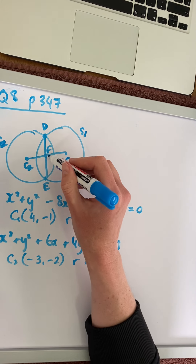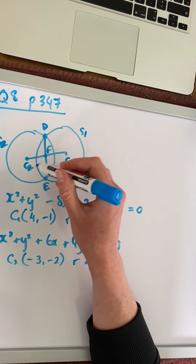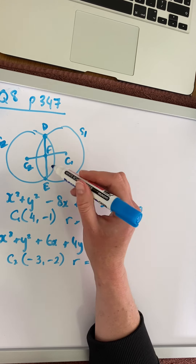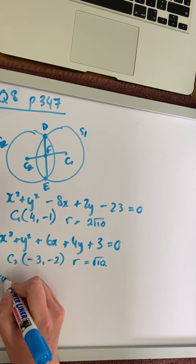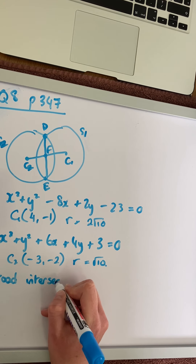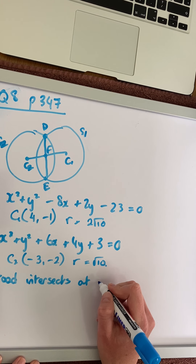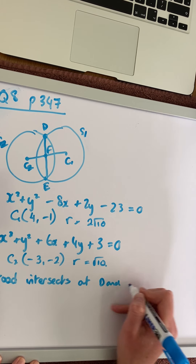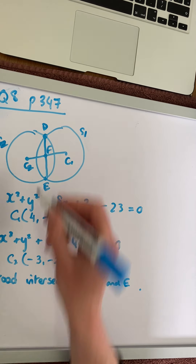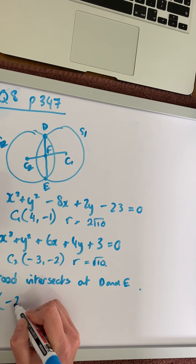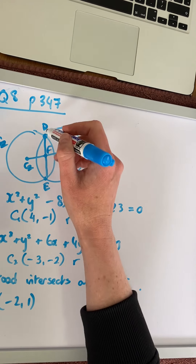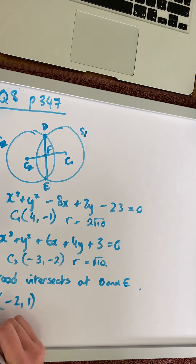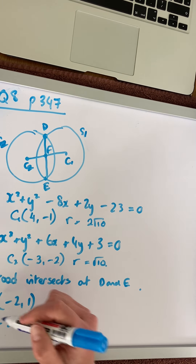This will be important for finding the coordinates of point F, because we can use the distance between the centers as a ratio to find point F. The next part says road DE is a road that intersects the two circles at D and E. We're looking for the equation of road DE, and we're given that point D is (-2, 1). The easiest way to find the equation of the common chord is S1 minus S2 equals 0.